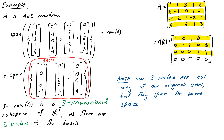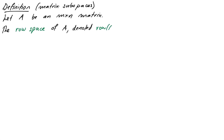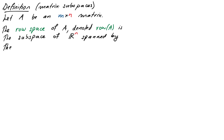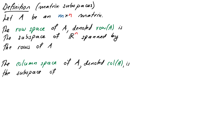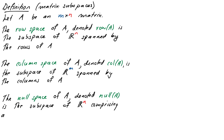There are three important subspaces to know: the row space, the column space, and the null space. For an m by n matrix A: the row space of A is the subspace of R^n spanned by the rows of A; the column space of A is the subspace of R^m spanned by the columns of A; and the null space of A is the subspace of R^n comprising all solutions to Ax = 0, i.e., the homogeneous equation. The null space is sometimes called the kernel of A.